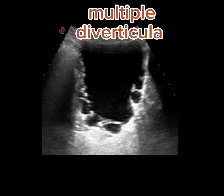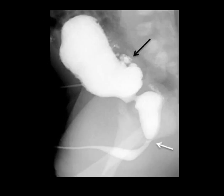Another example where we can see a thick trabeculated walled urinary bladder studded with multiple small diverticula. This is an example of a voiding cystourethrogram, where a white arrow indicates a posterior urethral valve with dilated posterior urethra, and a black arrow indicates small diverticula along the lower posterior wall of the urinary bladder.